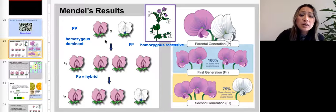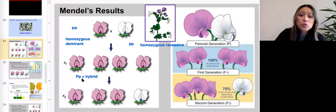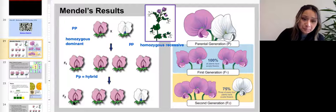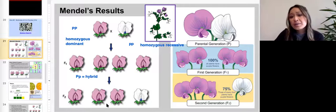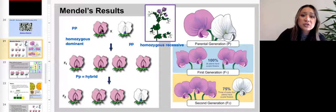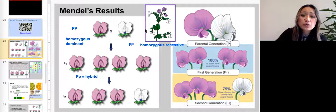And so Gregor Mendel noticed that. And when he bred, when he crossed the hybrid flowers, that's when he saw the mix of traits here. And so we're calling this first set of pure bread or true breeding plants here, the parental generation.